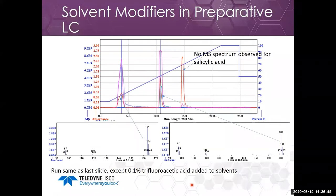One important thing when working with pH: many columns are based on silica gel. Read the instructions for your column, because most columns do not run well under basic conditions — the underlying silica dissolves and you damage the column. Check whether you can run above pH 7 or 7.5 on a silica-based C18 column.